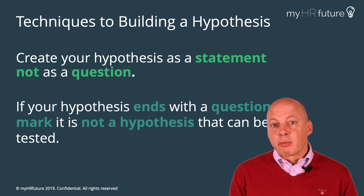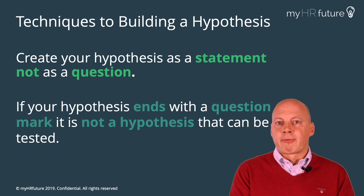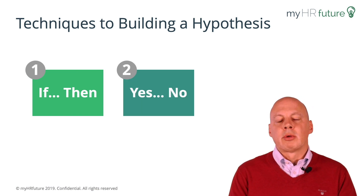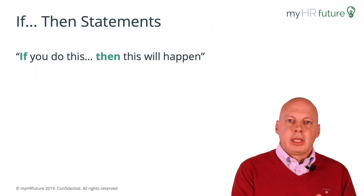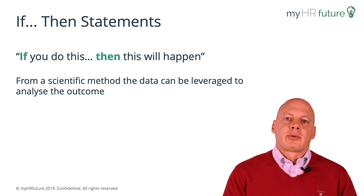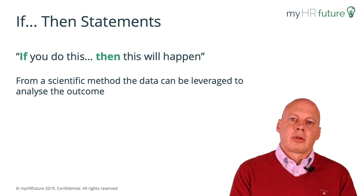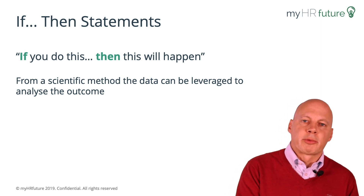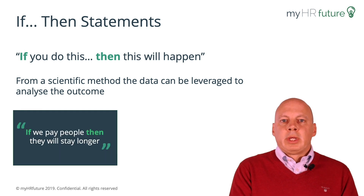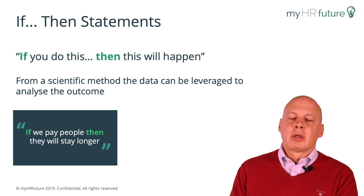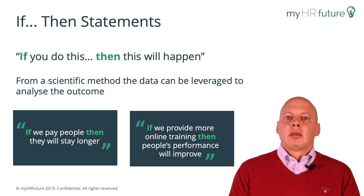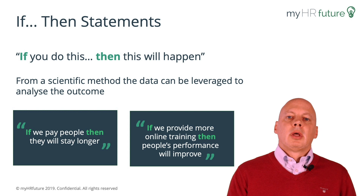There are a couple of ways to think about this. One is the if-then technique, and the other is the straightforward yes-no technique. The if-then technique is: if you do this, then this will happen. It allows you to look at the data and analyze whether doing something leads to a consequence. For example: if we pay people more, then they will stay longer. If we provide more online training courses, then people's performance will improve.